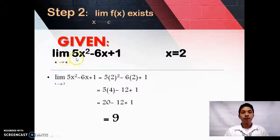So, the limit of 5x² - 6x + 1 as x approaches c and the value of x will be the same, 2. Let's make it easier. The limit of 5x² - 6x + 1 will be 5(2)² - 6(2) + 1, and the final answer will be 9.